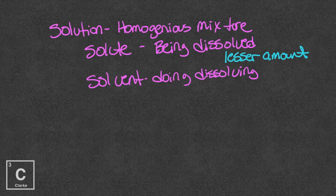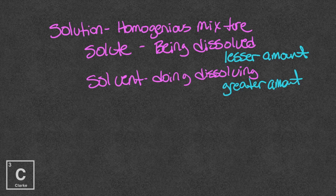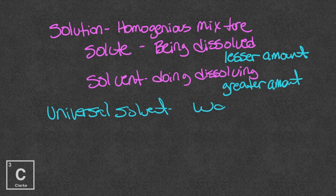The solvent is always going to be the one in the greater amount, and that makes sense. If something is going to be dissolved, there's got to be less of it, and if something is going to do the dissolving, there needs to be more of it. Let's go ahead and talk about the universal solvent. The universal solvent is water, H₂O. Water is a universal solvent because let's remember something very special about water — it's polar.